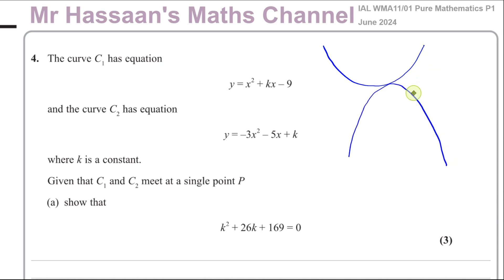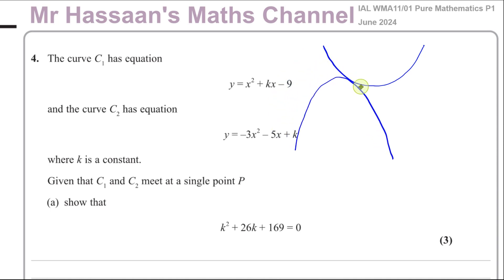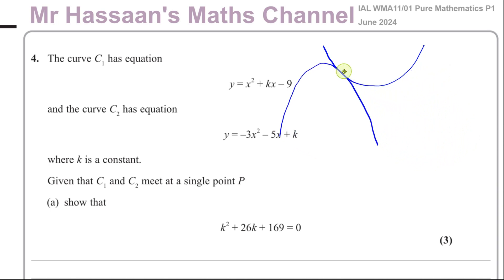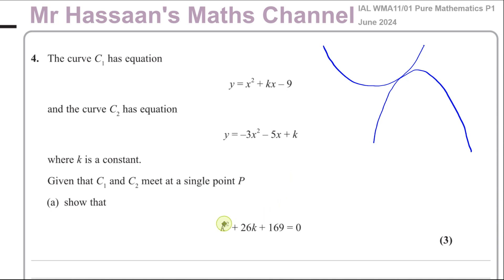These two quadratics could intersect twice, have no intersection, or touch in one place. In the case where they touch at one place, that would be the case of one solution. So we've got to show that for the case where they just touch in one place, we end up with the equation k squared plus 26k plus 169 equals 0.